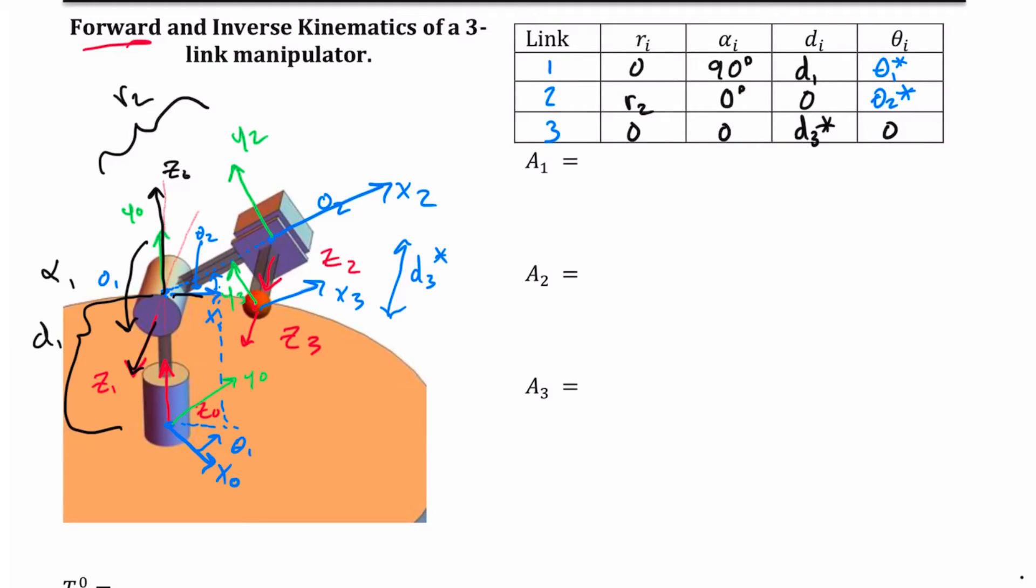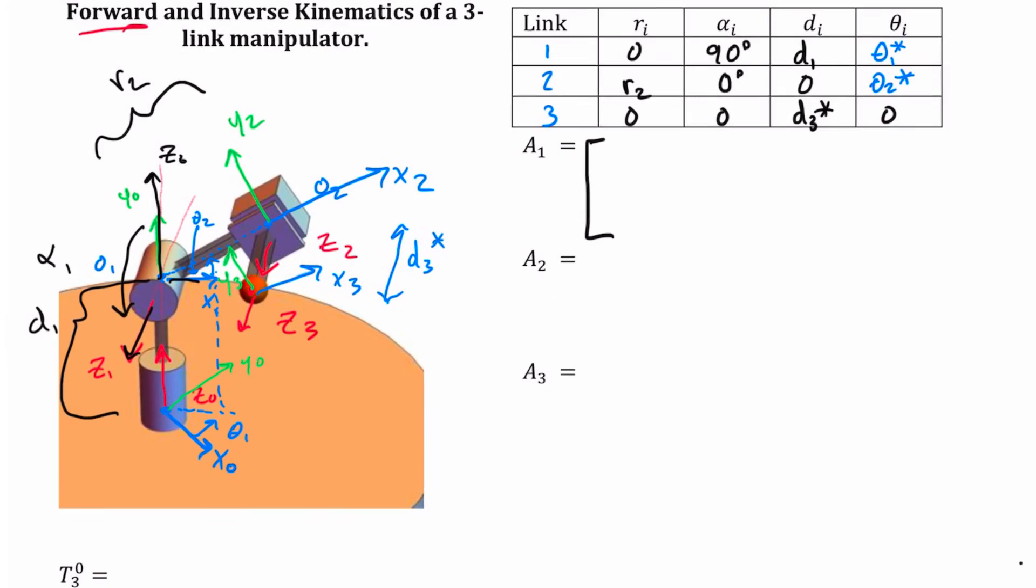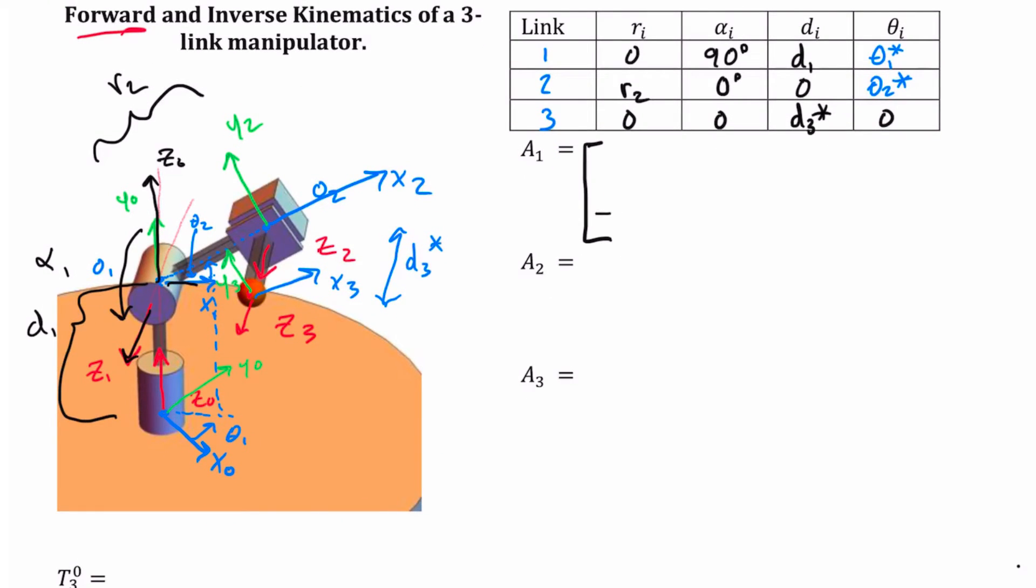Remember, you've got a formula for these A-frames. This homogeneous transform that we build is going to be a 4x4 matrix. So I can write in my little dashed lines. I know that it's going to be 0001.